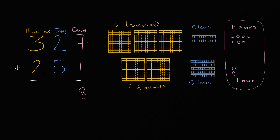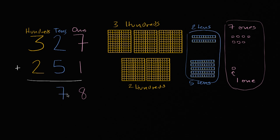Now let's look at the tens. I had two tens, and now I'm going to add five more tens. Put them all together, you're going to have seven tens. Two tens plus five tens, you're going to have seven tens.